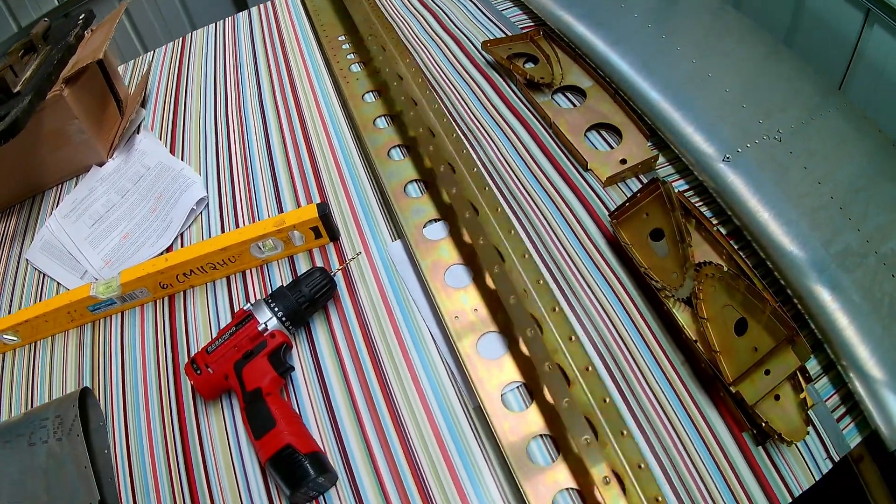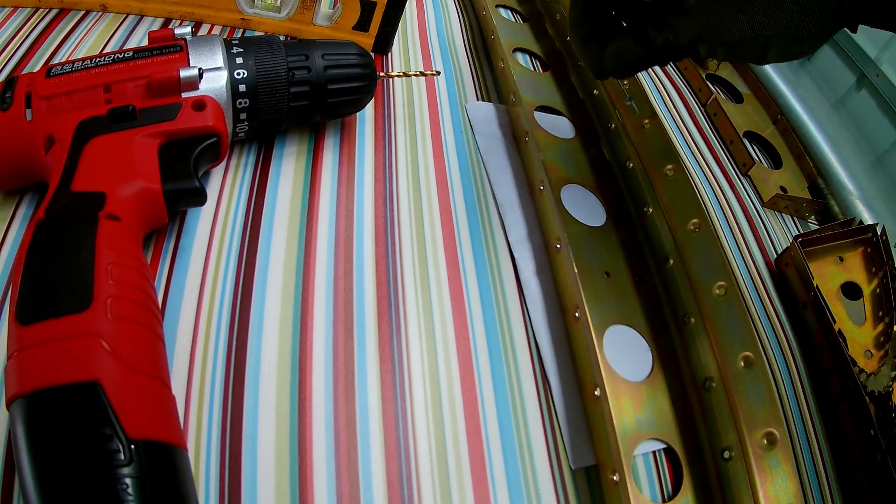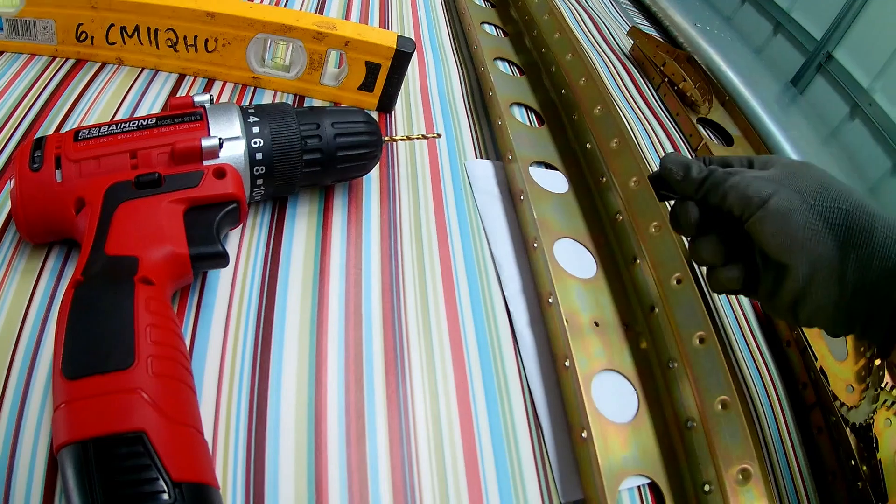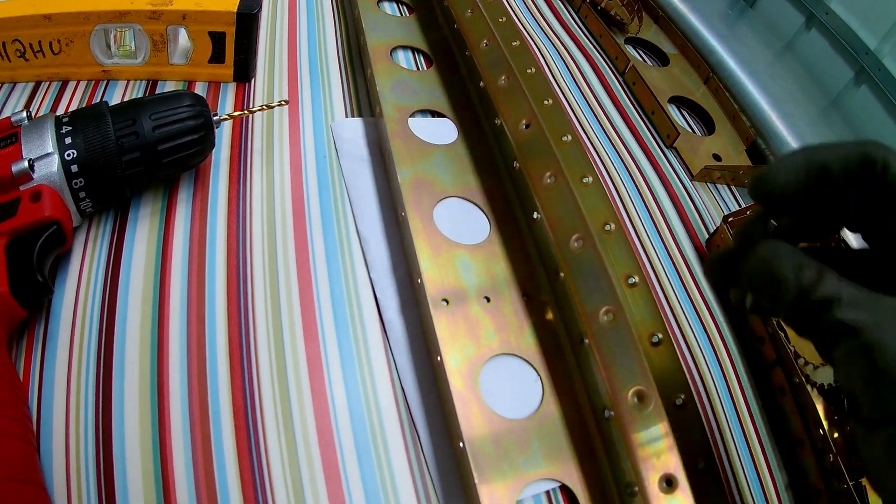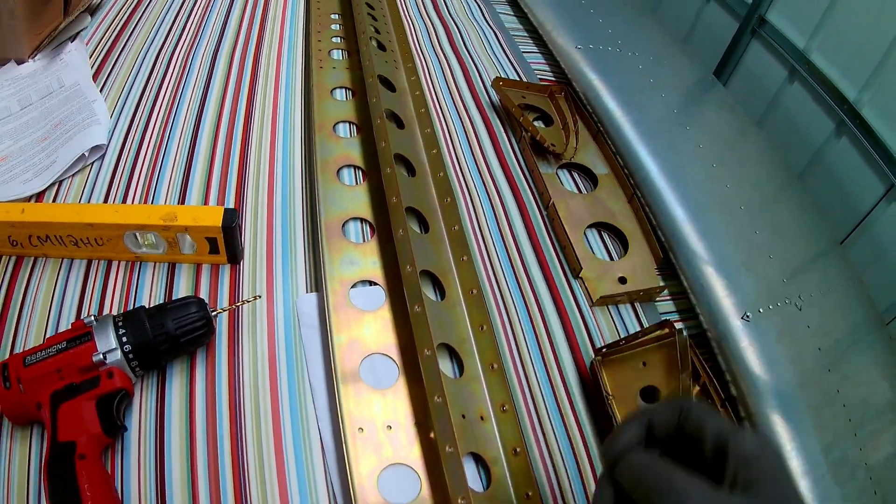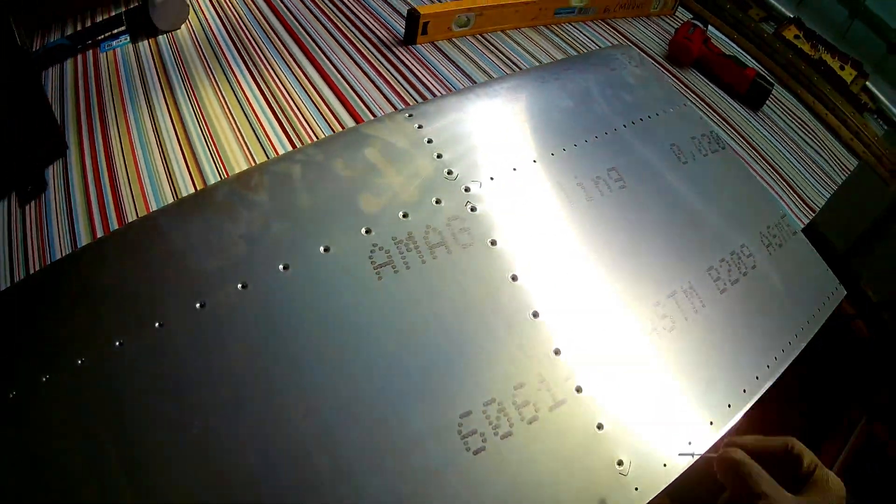I've gone ahead and dimpled all these. You can see the flush rivet fits in quite nicely. The thicker material you have to clean with the 3.3mm drill bit to get the rivets in. The smaller ones you don't need that as much. As for the skin, all the dimples have been done. Tight fit, would go in.